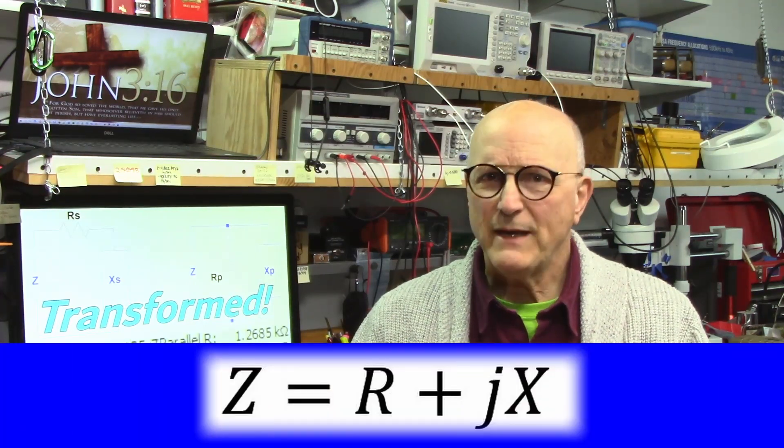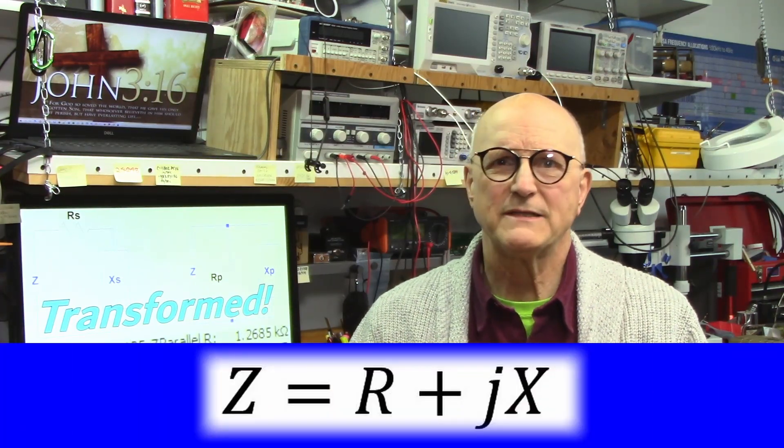Now to truly understand what is going on, I'm going to have to lay some foundations. When you use your Nano VNA or even your Antenna Analyzer to measure an impedance, this impedance is reported in the form of some real value or pure ideal resistance and some imaginary value or pure ideal reactance. It is in the form impedance equals R plus jX.